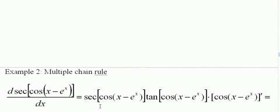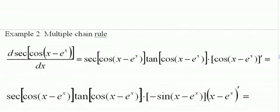The derivative of the secant is secant tan. So I have to have secant tan of what's in here, this big function here. And then I have to have times the derivative of the cosine of x minus e to the x. The derivative of this is going to be negative sine x times e to the x. But then we have to have the derivative of what's in here, the derivative of x minus e to the x, which of course is 1 minus e to the x.